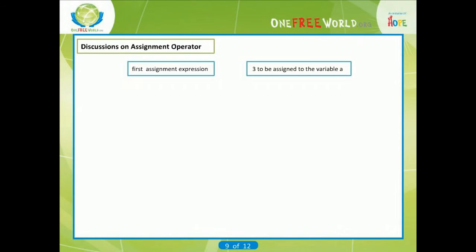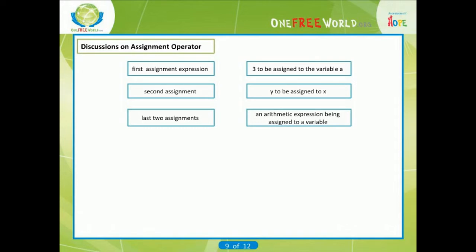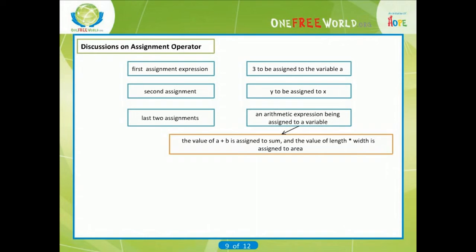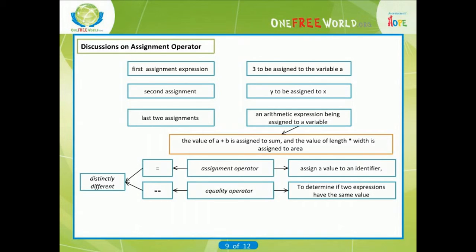Discussions on assignment operator. The first assignment expression causes the integer value 3 to be assigned to the variable. The second assignment causes the value of y to be assigned to x. In the third assignment, the floating point value 0.001 is assigned to delta. The last two assignments each result in the value of an arithmetic expression being assigned to a variable. That is, the value of a + b is assigned to sum, and the value of length * width is assigned to area. Remember that the assignment operator = and the equality operator == are distinctly different. The assignment operator is used to assign a value to an identifier, whereas the equality operator is used to determine if two expressions have the same value. These operators cannot be used in place of one another.